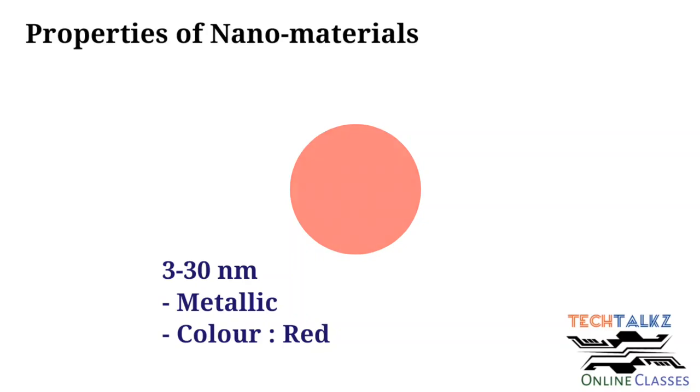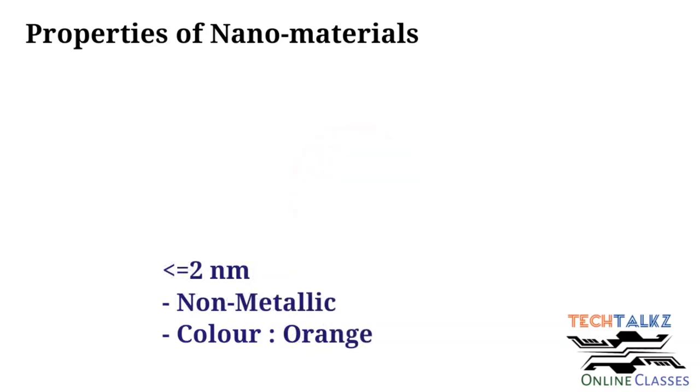If the size goes down to 2 nanometer or less than that, it will be orange in color and it will be non-metallic. So from metallic to non-metallic, and from red color to orange in color in the gold cluster.